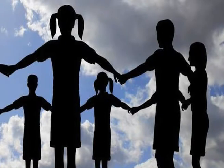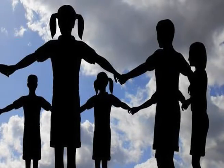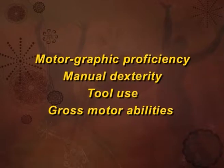Functional difficulties manifested by such children may include poor fine motor skills such as motor graphic proficiency, manual dexterity, and tool use, or gross motor abilities such as walking, running, or jumping. Some children may have difficulties in both areas of fine motor and gross motor skills, whereas others might have only one of the two.